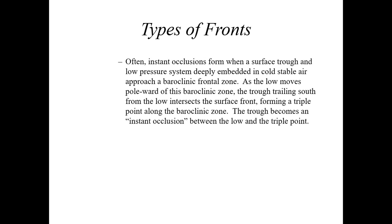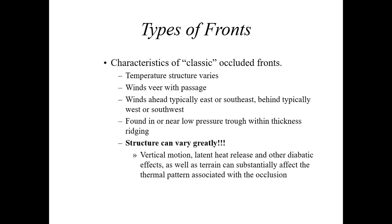Often instant occlusions form when a surface trough in a low pressure system deeply embedded in cold stable air approaches a baroclinic frontal zone. As the low moves poleward of this baroclinic zone, the trough trailing south from the low intersects a surface front — this is known as a triple point. The triple point is really important — it's usually the location of the most severe weather with an occluded front and could also be a point at which a new area of low pressure develops. With occluded fronts, the winds are going to veer or change in a clockwise manner with passage: winds ahead of the occlusion are typically east or southeast, then veer west or southwest behind the occlusion.